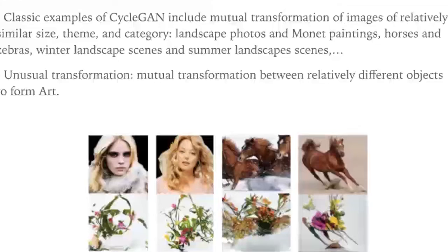In our opinion, art creation can be achieved by connecting different things. So we propose the concept of unusual transformation — making mutual transformations between relatively different objects to form art. A good example is surrealism: things that never coexist in the real world appear together. Based on this idea, we propose unusual transformation as a highly abstracted transformation between relatively different domains of objects, such as macro and micro sizes of plants and animals. For example, portraits or animal photos could be transformed into ikebana.